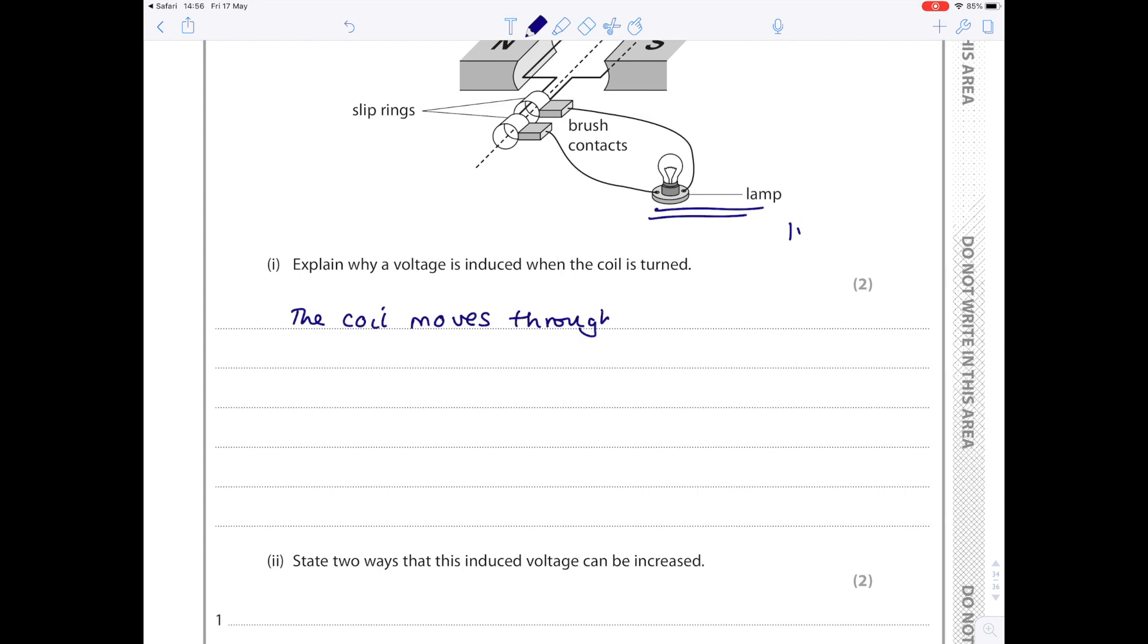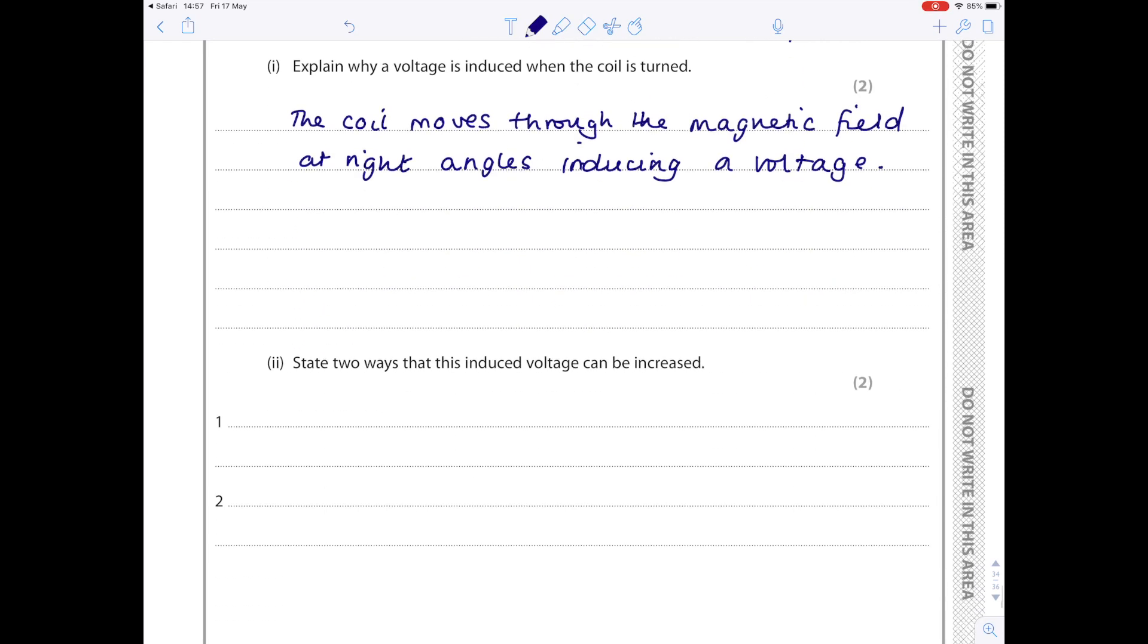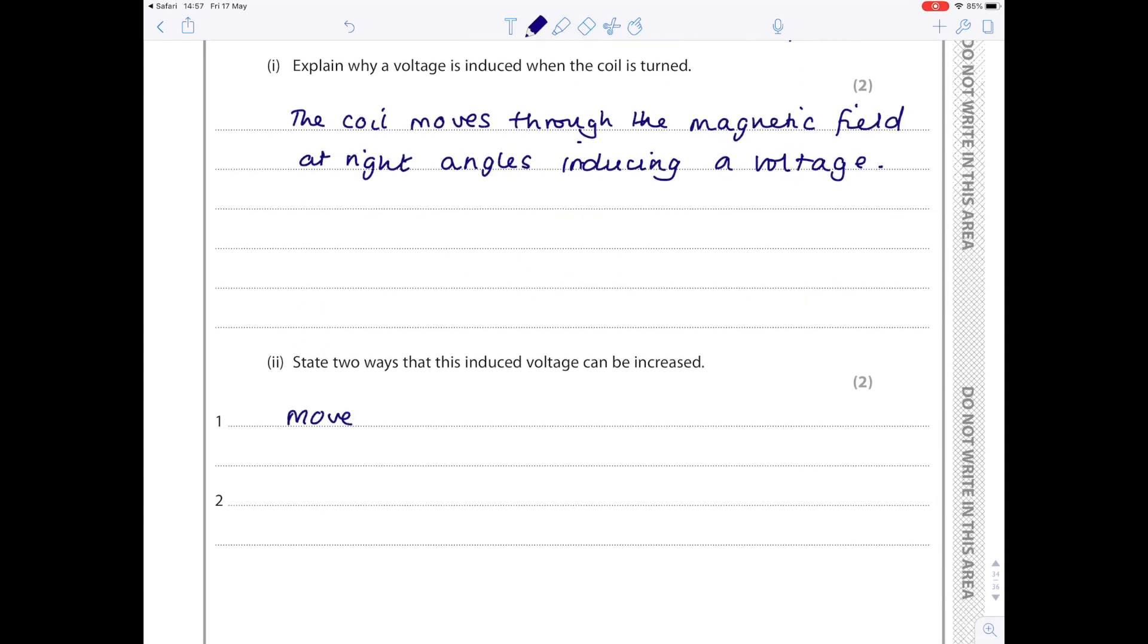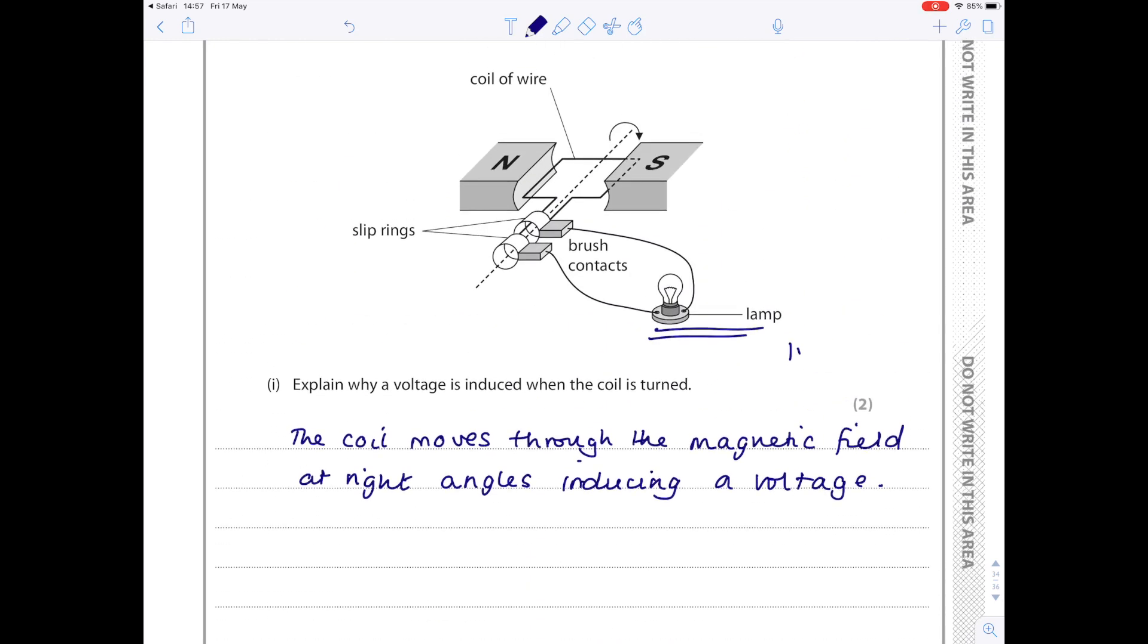So explain why a voltage is induced when the coil is turned. Now here the answer is always the same, which is that the coil moves through the magnetic field at right angles. It's crucial that it's at right angles, otherwise you won't get a voltage induced. And how could we make this induced voltage larger? Well, move the magnet faster or increase the turns on the coil. People are always so tempted to say increase the current here, but that makes no sense because you're trying to output current. You're not putting it in in the first place. So make sure you're very clear that this is the generator and not the motor.